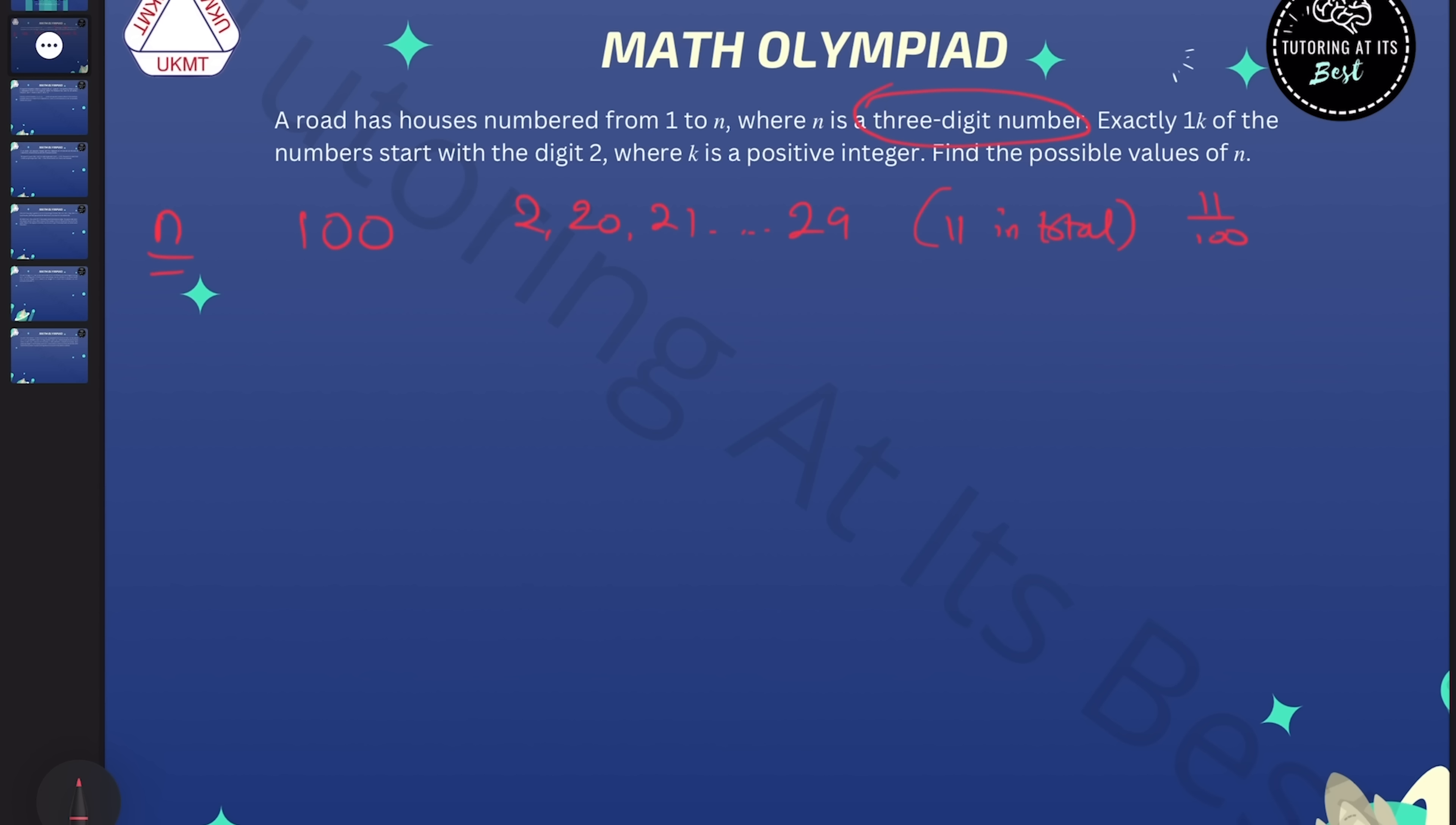But because the number of houses starting with a 2 is not going to change for a bit, we can keep increasing n and look at when this will cancel down. So if we say n is 110, we know that this can cancel down, as that would give us 11 over 110, which will be equivalent to 1 over 10.